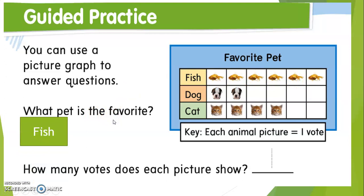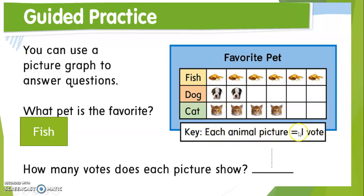So which one is the favorite? The fish, with six votes. The second question asks: how many votes does each picture show? If we go down to the key, we can answer it — each animal picture shows one vote, so the answer is one.